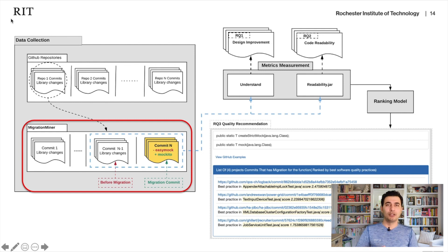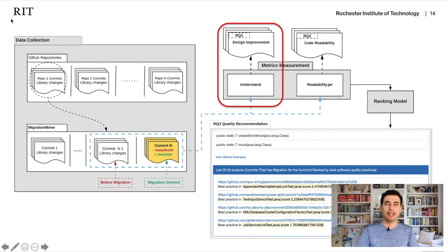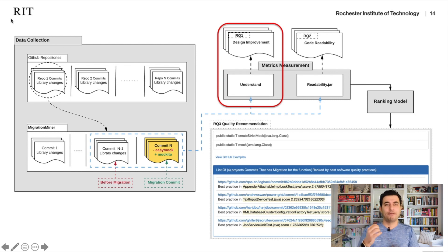By running Migration Miner on all these projects, we got a list of commits and projects where migrations happened. To study the impact of migration on software quality, we used tools such as the Understand tool, running it on the code after migration and on the code before migration. We ran it only on the classes involved in the migration — not all classes — to exclude unrelated files and reduce false positives.